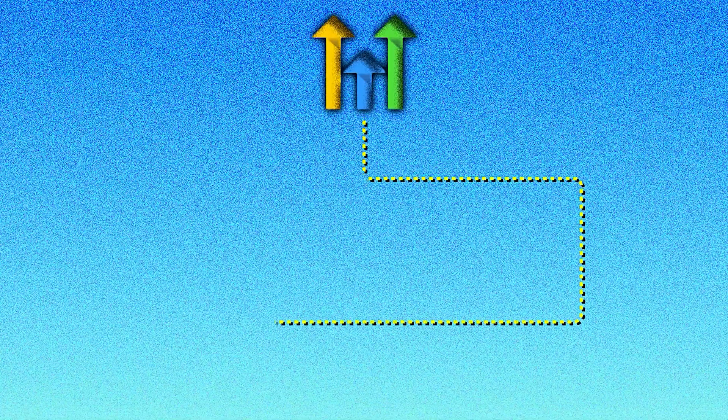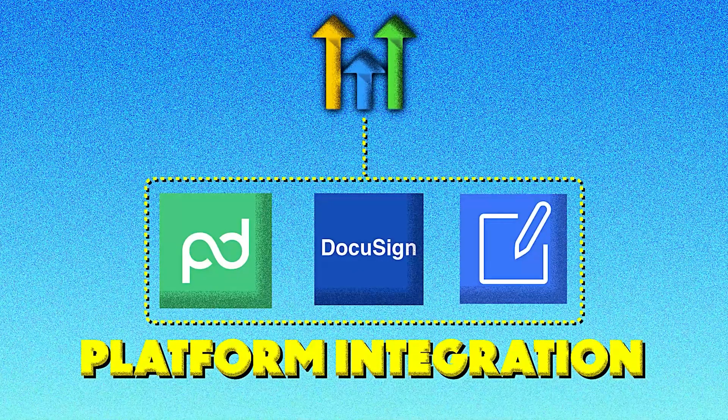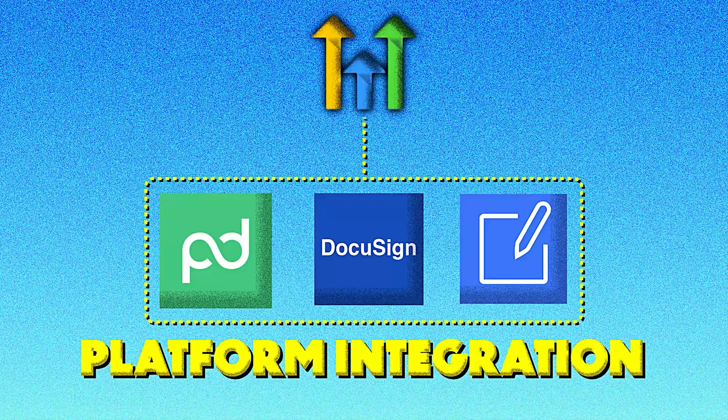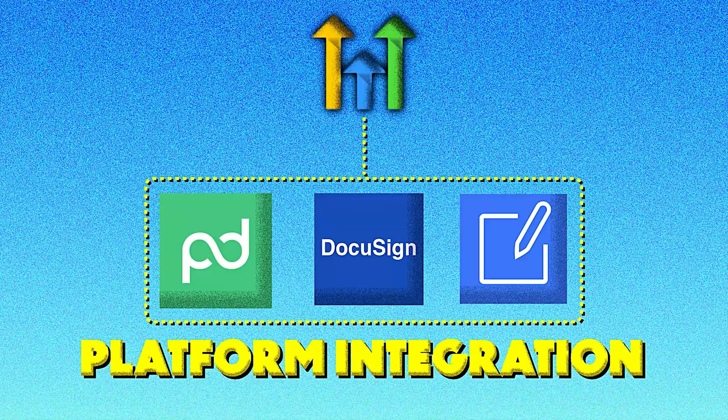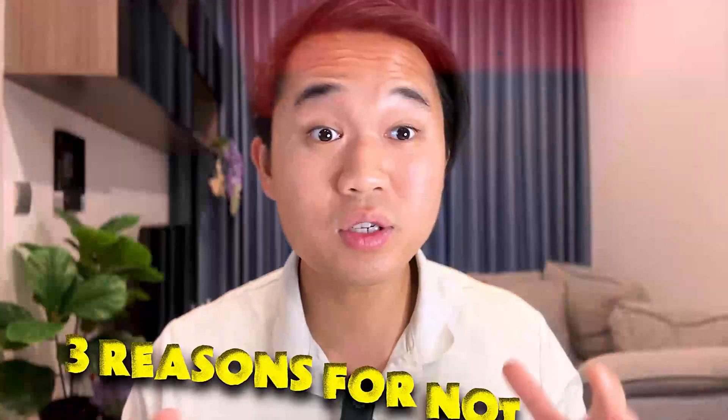To establish this outcome, we are going to be using Go High Level as a platform to integrate it with other third-party software such as PandaDoc, DocuSign, and SignRequest.